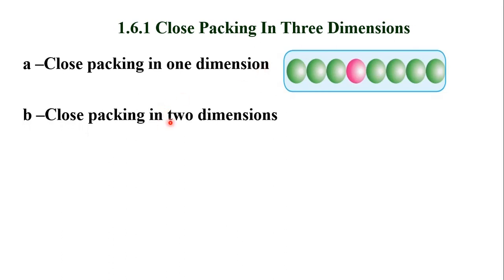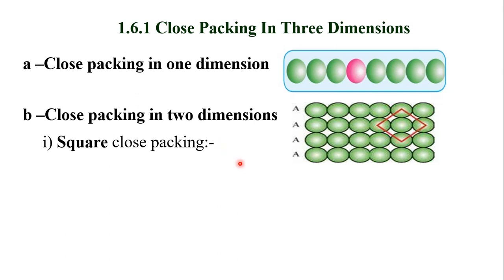In case of close packing in two dimension, two ways are there. One is square close packing. In case of square close packing, one dimensional rows are placed one above another — that is, stacked one above another — so that we get a two dimensional square close packing type of arrangement. Here each sphere from the second row touches the sphere of the first row, the sphere from the third row touches the sphere of the second row, and this arrangement is repeated. All these spheres align vertically as well as horizontally.